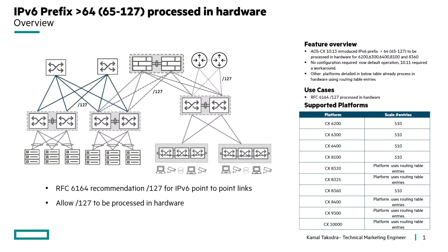AOS CX 10.13 release introduced the ability to process IPv6 prefixes greater than 64 in hardware TCAM for the 6200, 6300, and 6400.